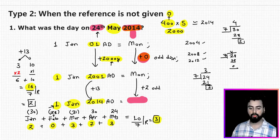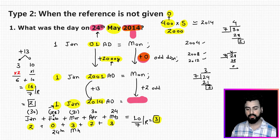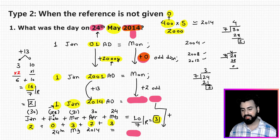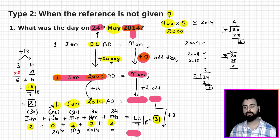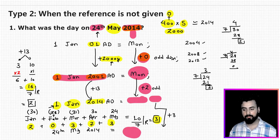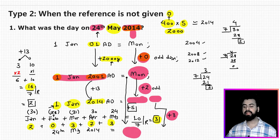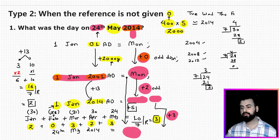So from 1st January 2014 to 24th May 2014, we add 3 odd days. Combining: from 1st January 2001 to 24th May 2014, the total odd days are 2 plus 3 equals 5. Starting from Monday and adding 5 odd days: Tuesday, Wednesday, Thursday, Friday — leaving 4 days — lands on Saturday. So 24th May 2014 was a Saturday.